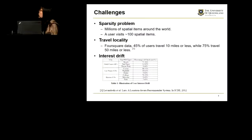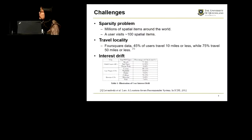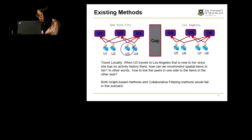The third challenge is that the user's interests may drift across different regions. We study a specific group of users on Foursquare data and pick up the top POI types for the same group of users when they travel to different cities. We can see that the top POI types for the same group of users in different cities are very different.